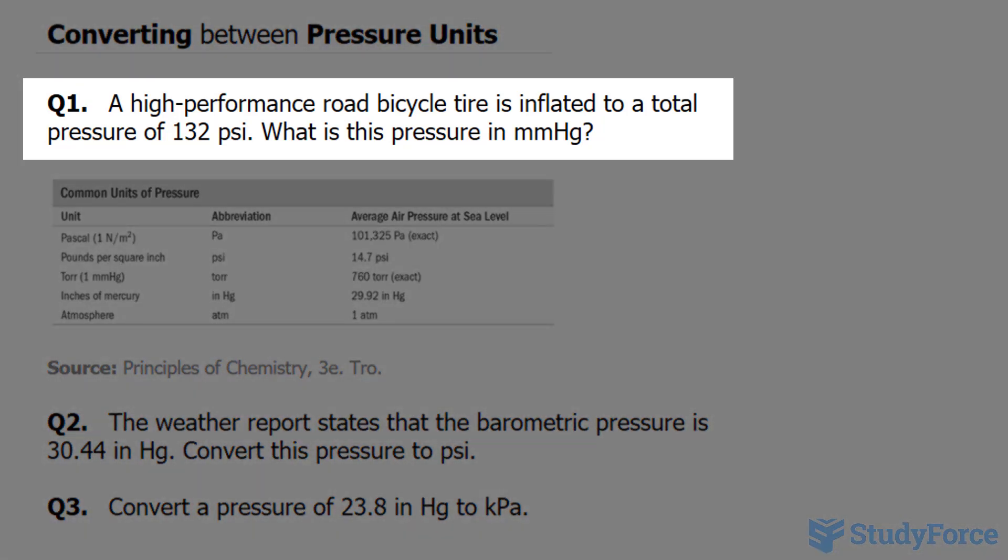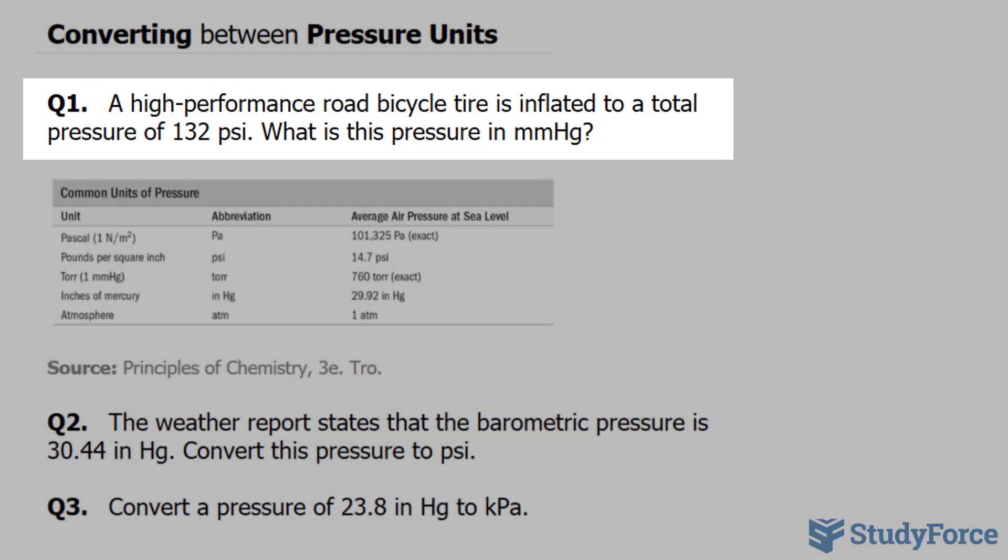Question one reads, a high-performance road bicycle tire is inflated to a total pressure of 132 psi, which stands for pounds per square inch. What is the pressure in mmHg, which represents millimeters of mercury?